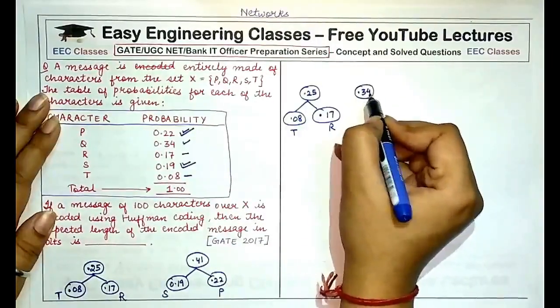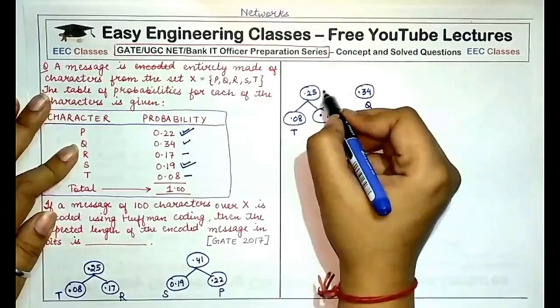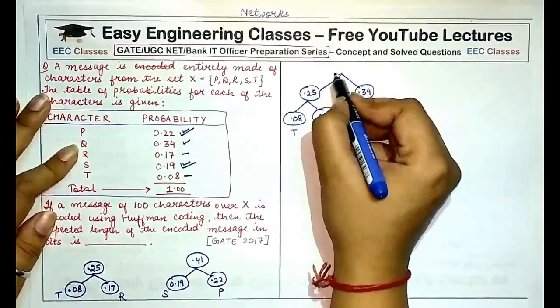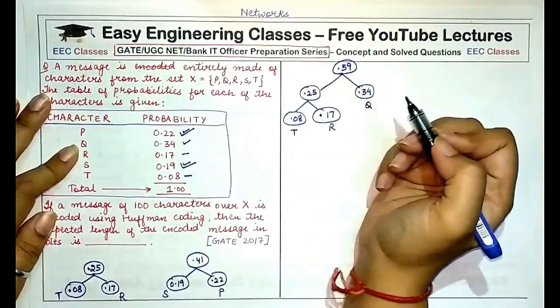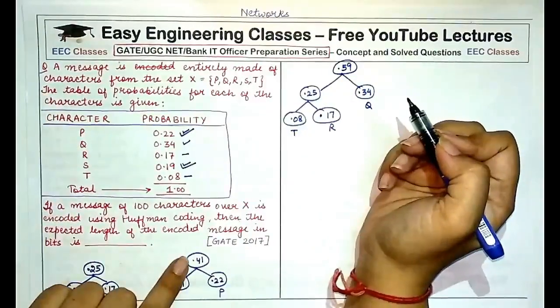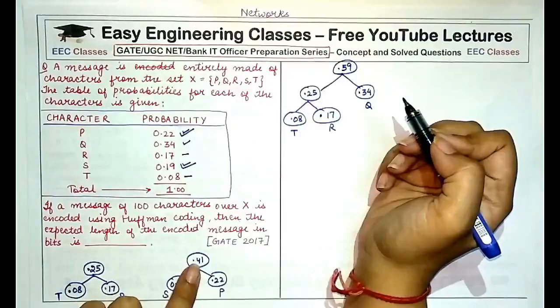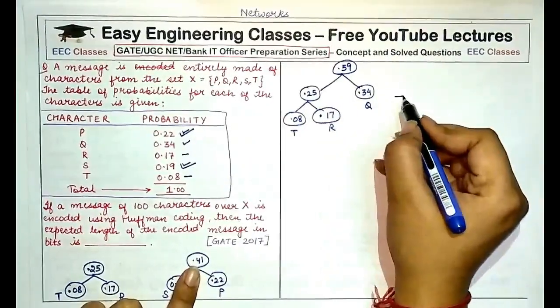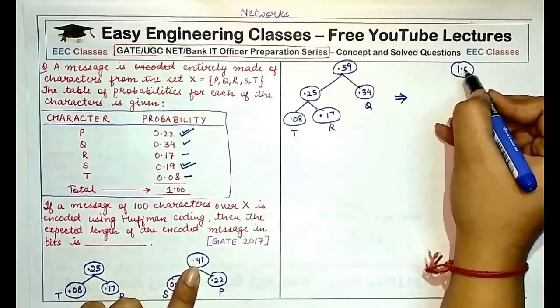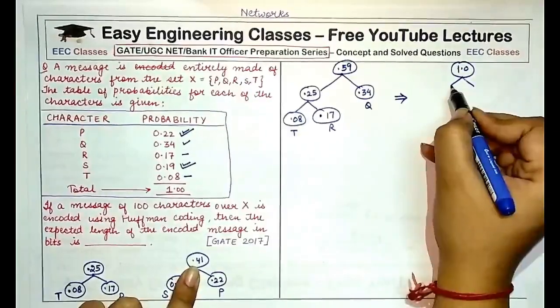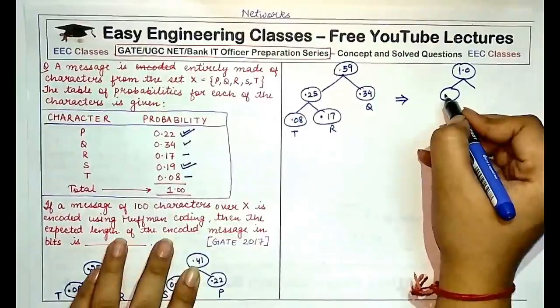So the tree would look like 0.25 with the two nodes 0.08 and 0.17. This is R, this is T. And now we'll combine it with 0.34, which was for the character Q, and the sum of it would come out to be 0.59. Now at the end we are left with 0.41 and 0.59.